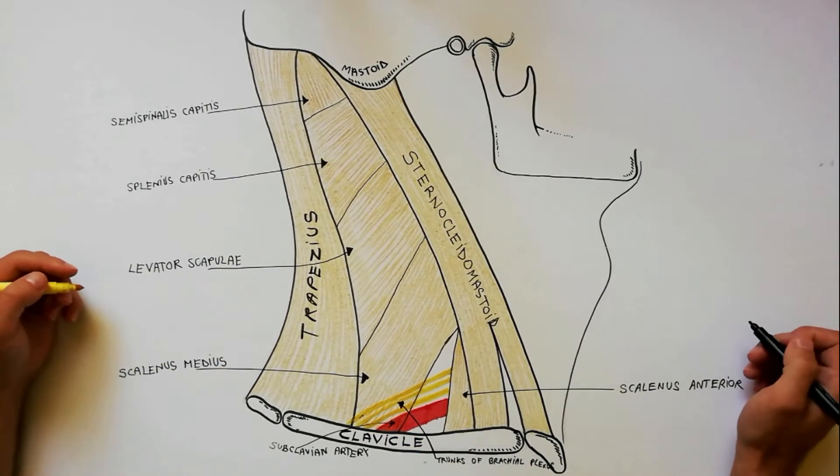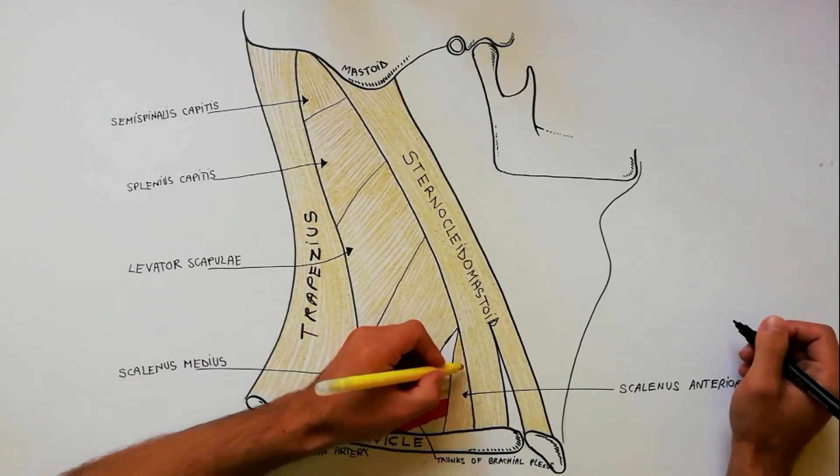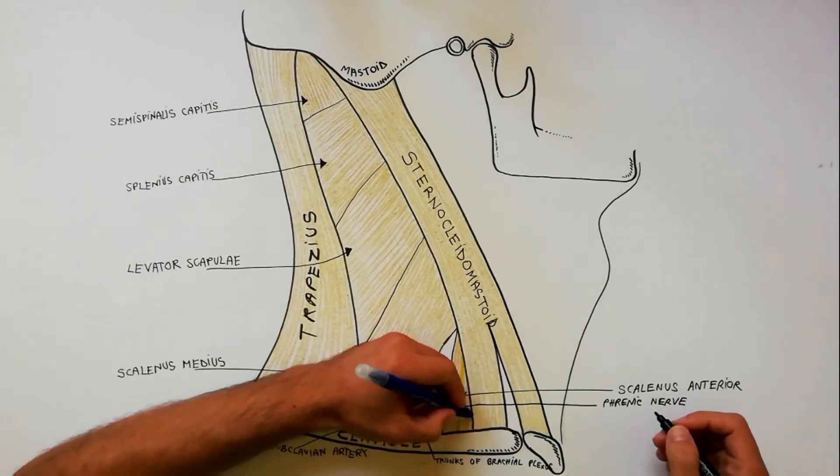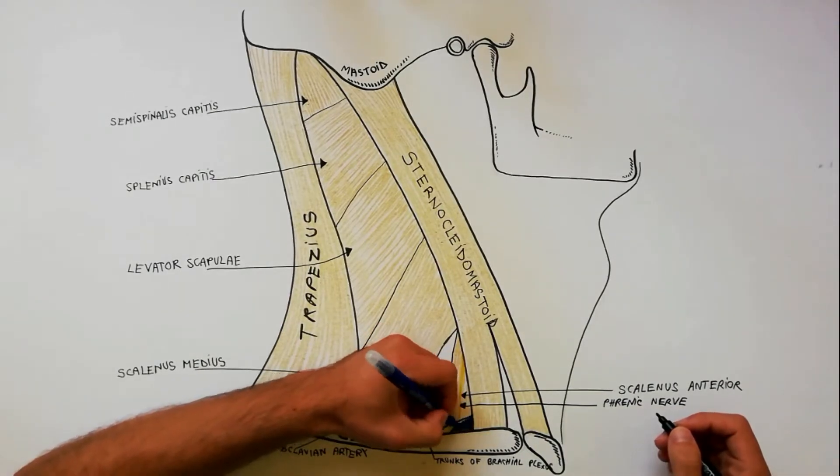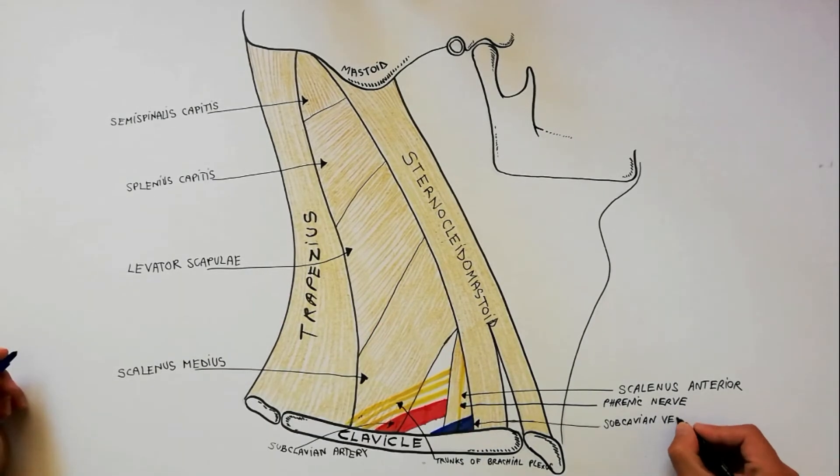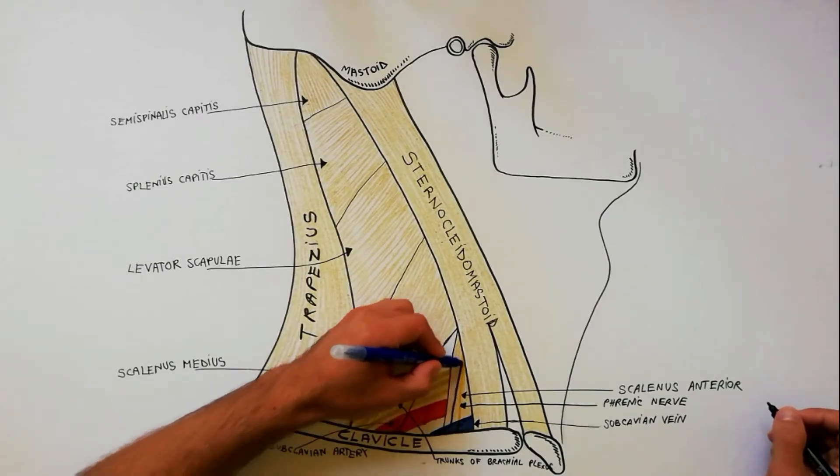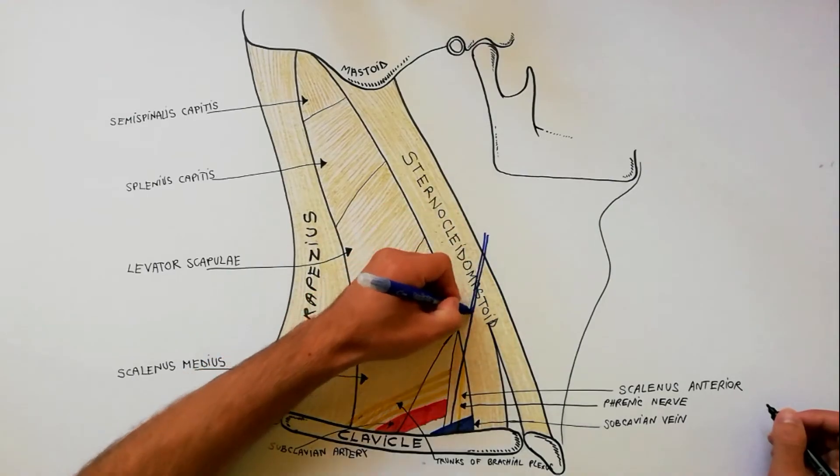In front of the scalinus anterior passes the phrenic nerve which is oriented vertically and the subclavian vein which is oriented horizontally. At this level the subclavian vein receives the external jugular vein.